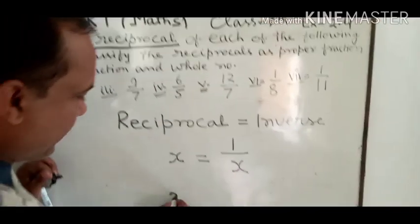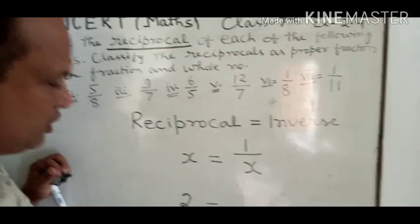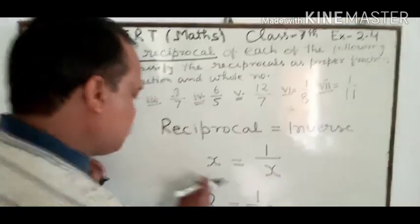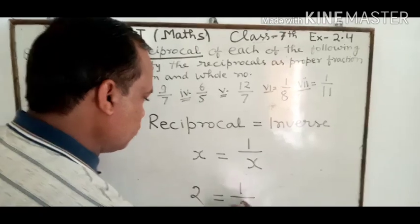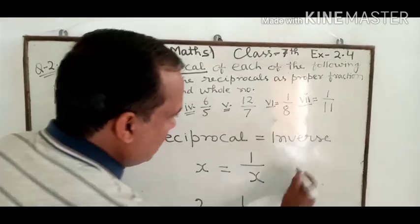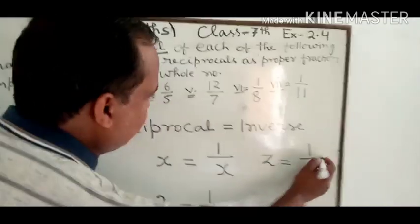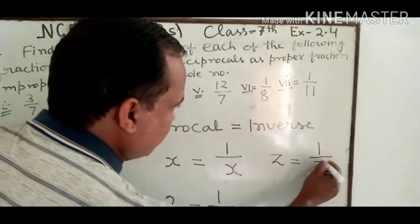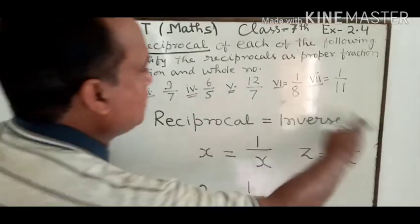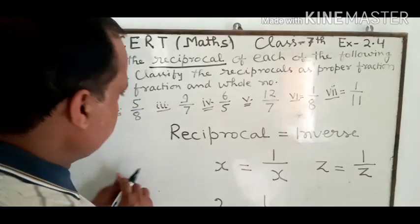जैसे 2 का reciprocal निकालना है, तो 1 upon 2 हो जाएगा। किसी भी number z का reciprocal होगा 1 upon z — note कर देंगे z। This is your reciprocal of any number.